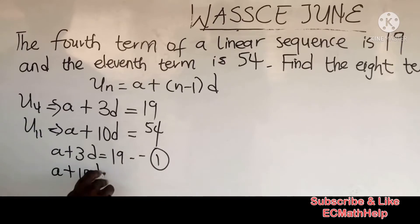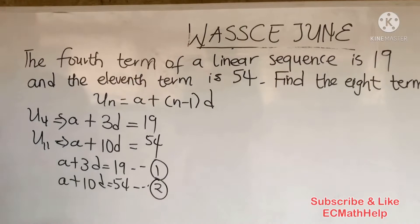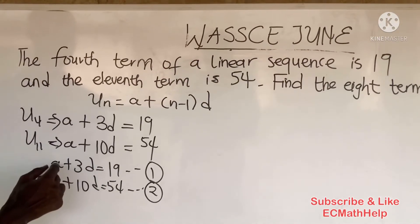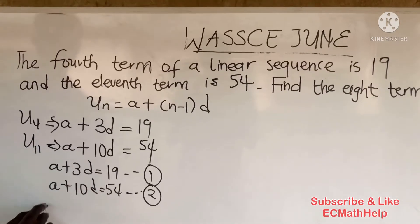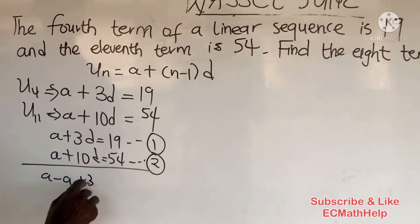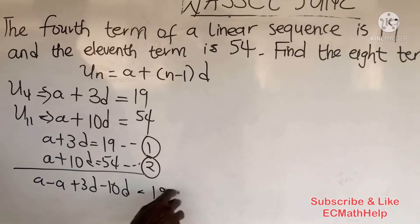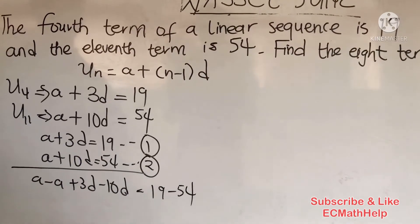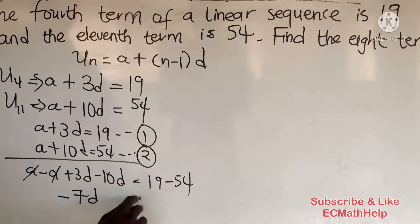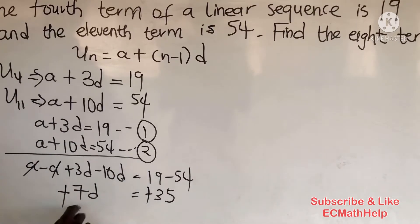Solving these simultaneously, subtract equation 1 from equation 2: (a + 10d) minus (a + 3d) equals 54 minus 19. This gives us 7d = 35.